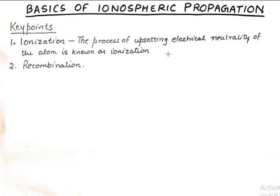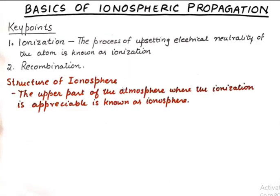Some electrons leave the outer shells of the atom, thereby making the atom an ion, and some free electrons also roam in the atmosphere — that process is known as ionization. This is more predominant at higher ranges of the atmosphere because the sun's rays are stronger there. The exact opposite of that phenomenon is known as recombination. So those are the two key points before we get to the structure of the ionosphere.